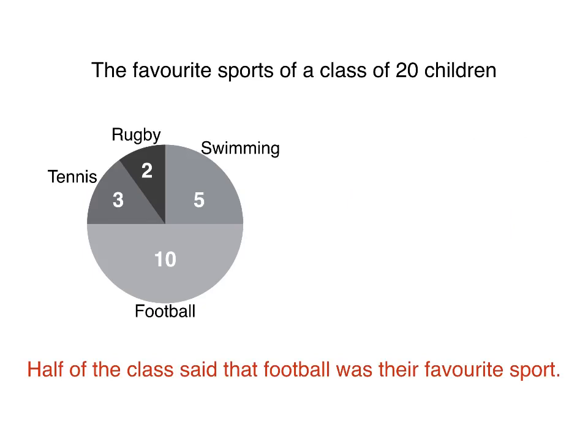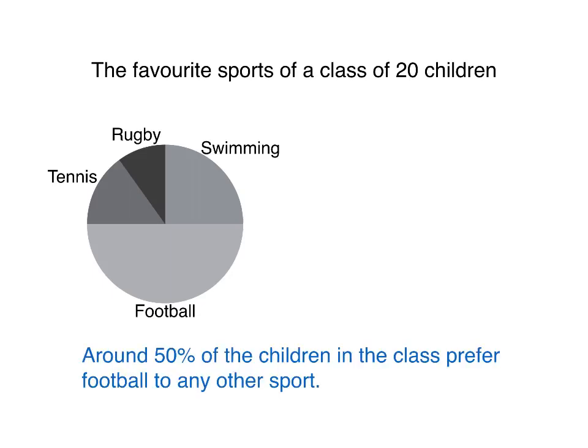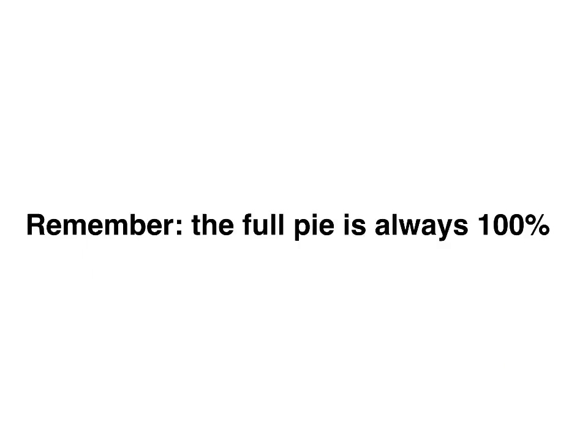Because we can still see that 10 out of 20 children preferred football. And even if you don't see those numbers, we can still see percentages or proportions in the pie chart. The full pie chart is 100%, so it looks like football is approximately 50%, and we can say around 50% of the children in the class prefer football. So the key thing to remember with pie charts is: the full pie is always 100%.